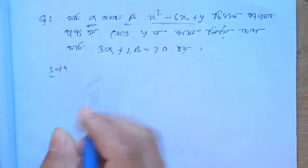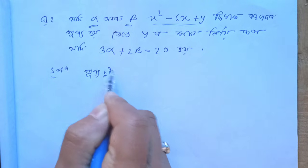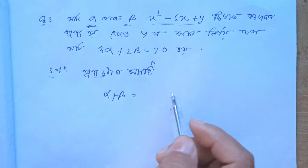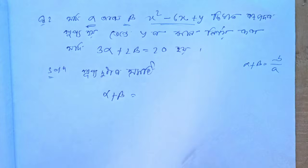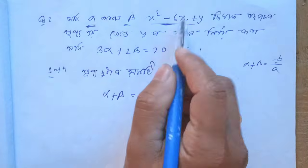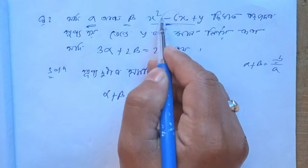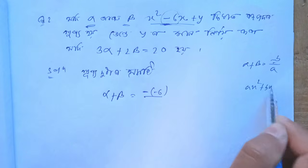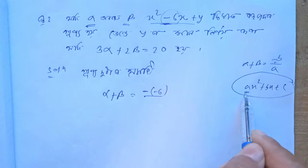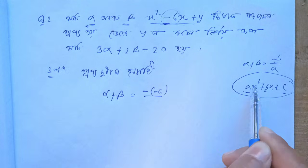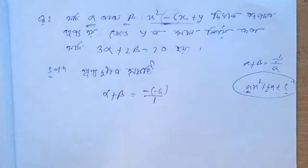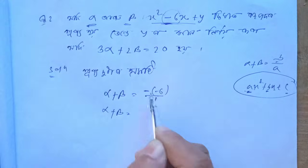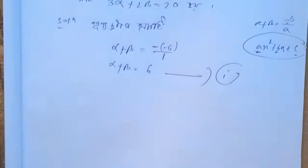We know from Vieta's formulas that alpha plus beta equals minus b by a. So alpha plus beta equals minus b divided by a. Here in x squared minus 6x, the coefficient b is minus 6 and a is 1, so alpha plus beta equals minus of minus 6, which gives us 6.